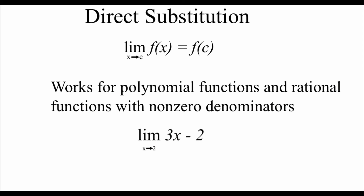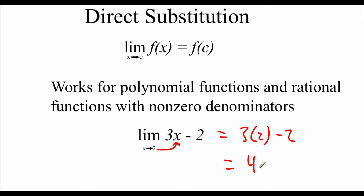A lot of what I was doing on that last page is called direct substitution, where I take whatever our c value is that our limit is approaching and just plug it into the function to get an answer. This works out really well for polynomial functions and rational functions, as long as that denominator is not 0. For example, the limit of 3x minus 2 as x approaches 2: plug in 2 for x, we get 3 times 2 minus 2, which is 6 minus 2, which equals 4.